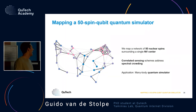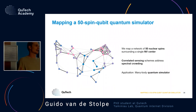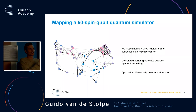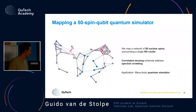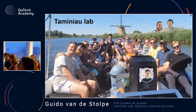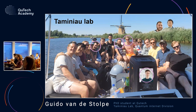To conclude: we mapped this network of 50 nuclear spins. For this we developed correlated sensing schemes, and we want to use this network as a many-body quantum simulator in the near future. Thank you all for your attention, and thank you to the people who contributed.